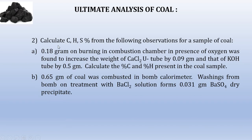Let us see another numerical. Calculate C, H and S percentages from the following observations of coal in the ultimate analysis. First observation: 0.18 g of coal burnt in a combustion chamber in the presence of oxygen; increase in weight of CaCl₂ U-tube = 0.09 g; increase in weight of KOH tube = 0.5 g. Second observation: 0.65 g of coal combusted in the bomb calorimeter gave 0.031 g of BaSO₄ dry precipitate.